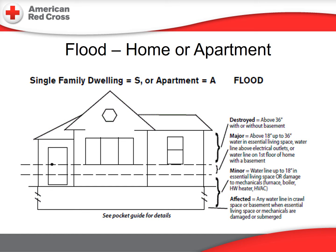Now it's time to focus on flood-related damage assessments. The diagram shown is for a single family dwelling or apartment. The lines indicate the level of water necessary to qualify a property for each damage classification. Affected is below the surface of the home. Minor would be a water line in an essential living space up to and including 18 inches. Major would be above 18 up to 36 inches. And destroyed would be above 36 inches.